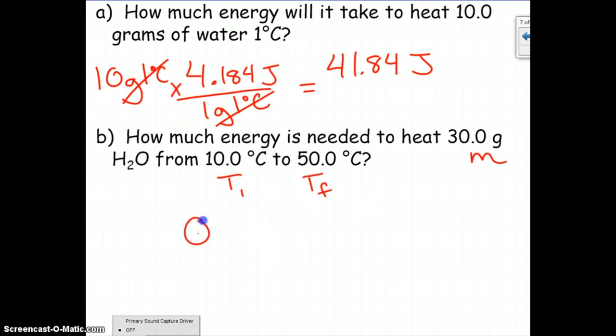We're going to be using our Q equals mc delta T here. Delta T is T final minus T initial, so 50 minus 10 is 40, so there's delta T. M is the mass, so you've got 30.